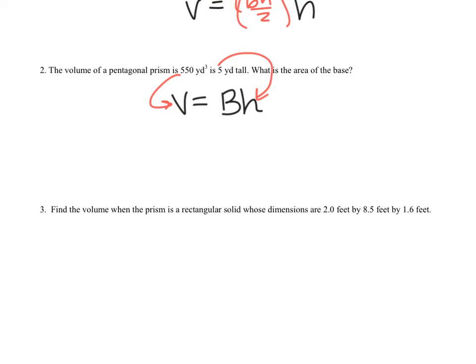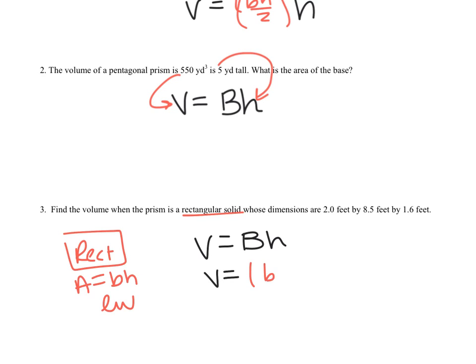Number 3 says find the volume when the prism is a rectangular solid whose dimensions are 2 by 8.5 by 1.6. Everything's in feet so it's nice and simple. We know we're dealing with a rectangle. We know volume equals Bh and the area of a rectangle is base times height or length times width. So I know volume equals base times height times my height.